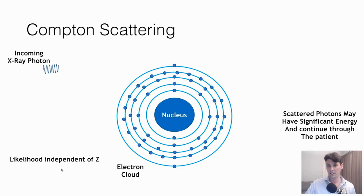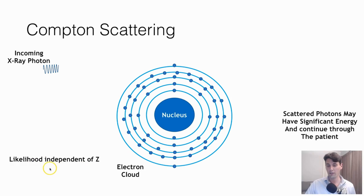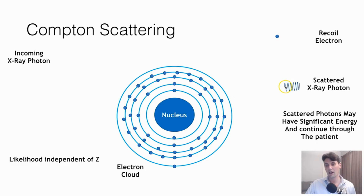The other effect is Compton scattering, which is the second dominant effect in X-ray imaging. Again, we have the nucleus and an electron cloud, but in this case the photon comes in and interacts with an outer shell electron. Because it's so far from the nucleus, the likelihood of the interaction is independent of Z — it's not really dependent on what's in the nucleus. The photon comes in, knocks the electron out, and then the photon goes out in the opposite direction in order to conserve momentum.